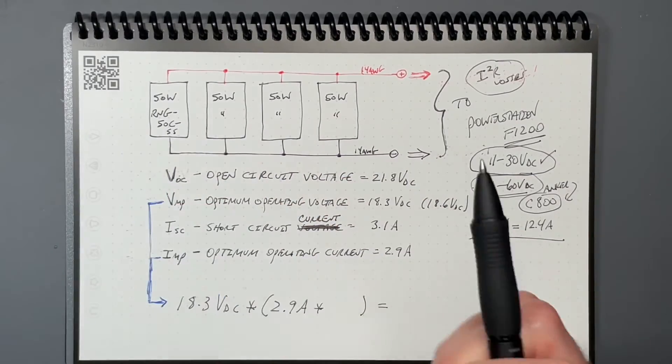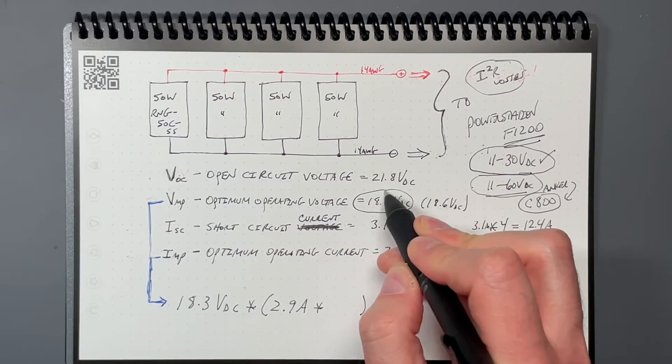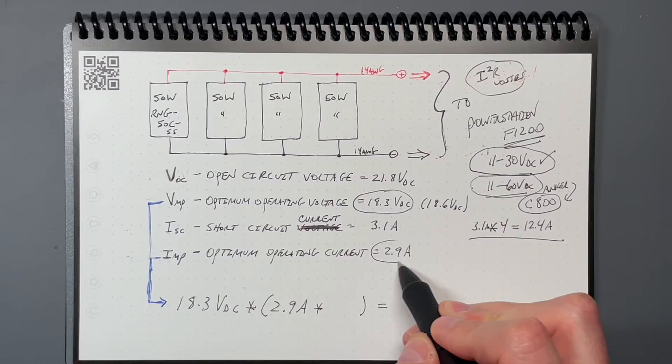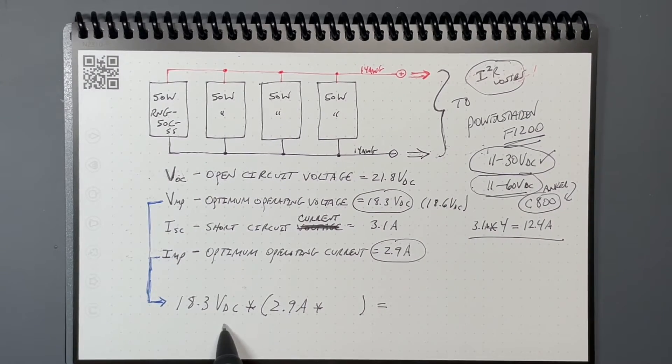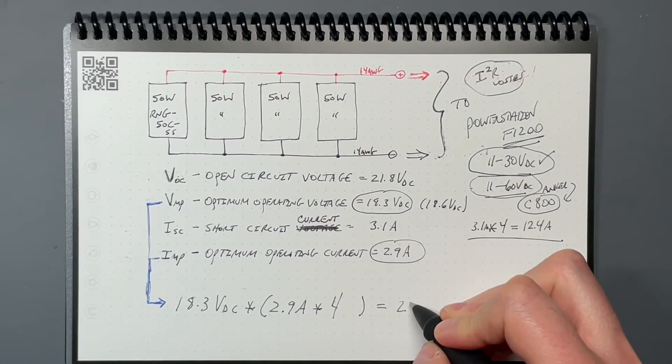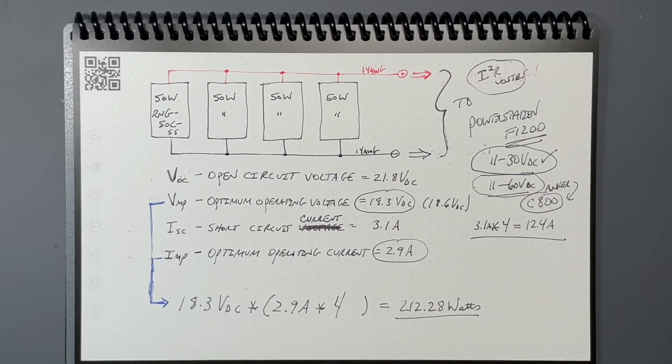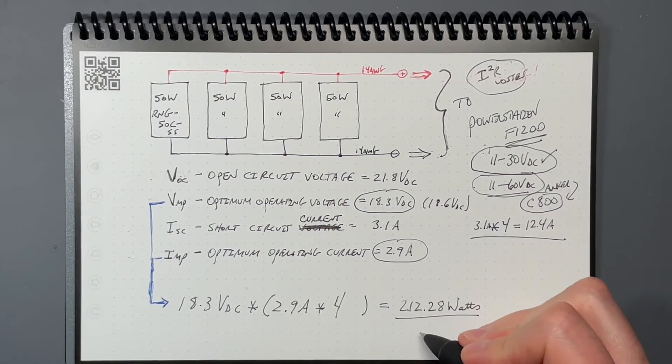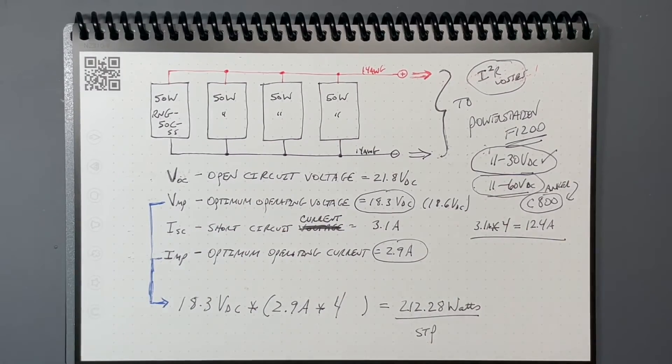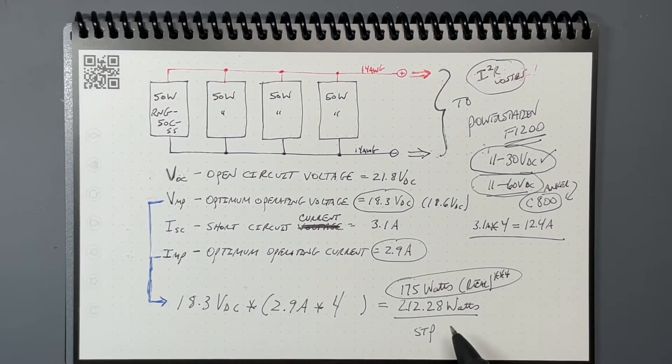These are the specs from the solar panel. There's an optimum operating voltage at the solar panel, which is 18.3 volts DC. Its optimum operating current is 2.9 amps. If we take my setup and go 18.3 volts times 2.9 amps times four panels, we get 212.28 watts. Now that exceeds the 200 watts that these are rated for. The highest I've seen is about 175 watts. I'm happy with that.